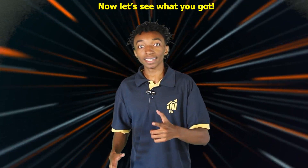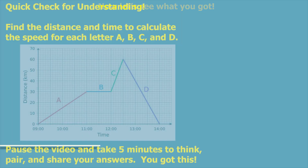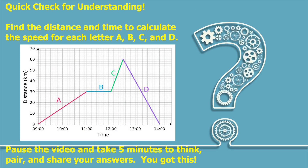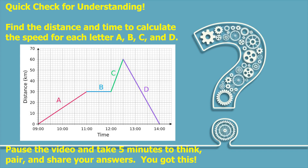Now let's see what you've got. Quick check for understanding: Find the distance and time to calculate the speed for each letter A, B, C, and D. Pause the video and take 5 minutes to think, pair, and share your answers.